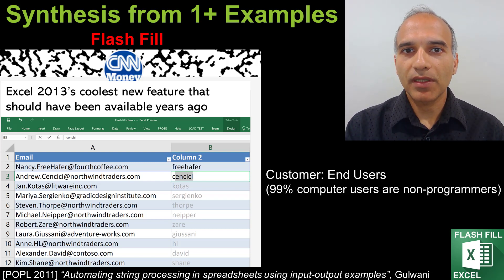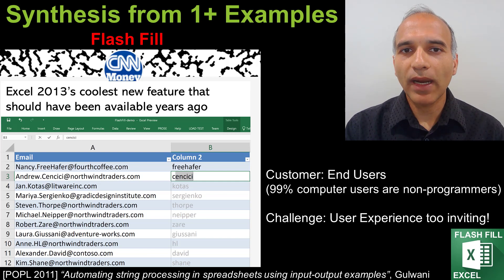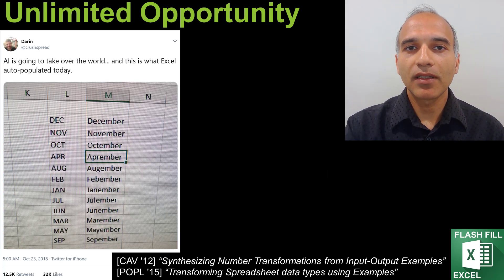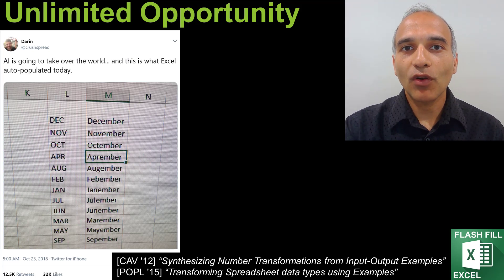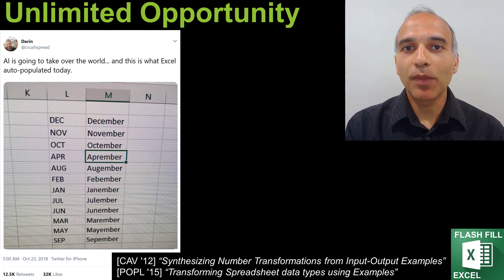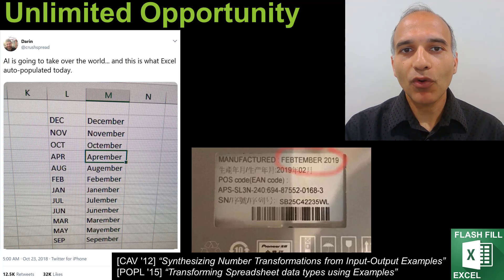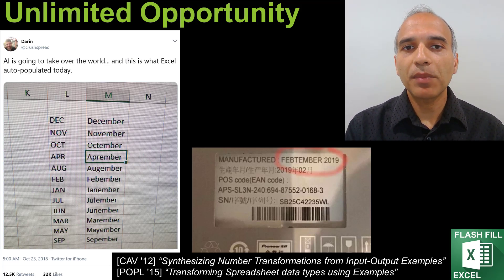Flash Fill can automate a wide variety of string transformations, but there are many tasks it cannot do, such as number or date transformations. The user experience is so inviting that people invariably want to give it a try even on tasks it was never meant for, and then talk about it when it does not work. There was a recent tweet with tens of thousands of reshares: 'AI is going to take over the world — look what Excel auto-populated for me today.' When they converted DEC to December, Flash Fill auto-completed JAN to Janember. Some people even came to the rescue of the feature, arguing this is how we should have named months in the first place. I recently came across a shipping label where someone even decided to incorporate Flash Fill as part of their process automation. The best thing about such customer feedback is that now you know what to prioritize, and while we can now handle such tasks, there is pretty much no limit to how intelligent the synthesizer can be for such map transformations.